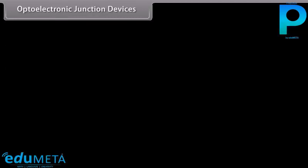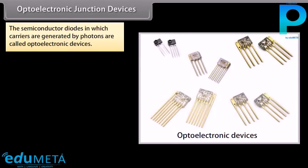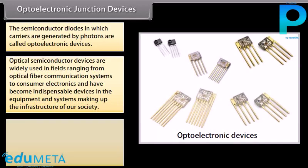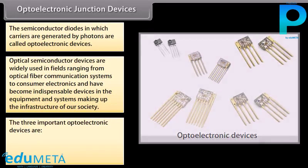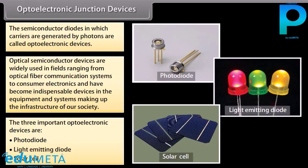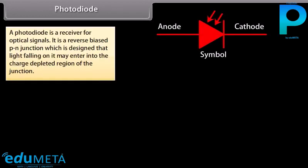Optoelectronic junction devices: the semiconductor diodes in which carriers are generated by photons are called optoelectronic devices. Optical semiconductor devices are widely used in fields ranging from optical fiber communication systems to consumer electronics, and have become indispensable devices in the infrastructure of our society. The three important optoelectronic devices are: photodiode, light emitting diode, and solar cell.